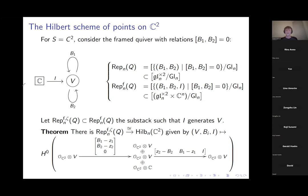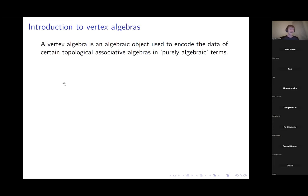The next thing I want to talk about is representation theory. The main characters on the representation theory side are called vertex algebras. A vertex algebra is some kind of algebraic object which encodes the data of a topological associative algebra in purely algebraic terms.